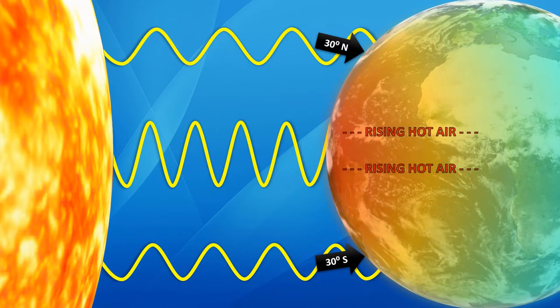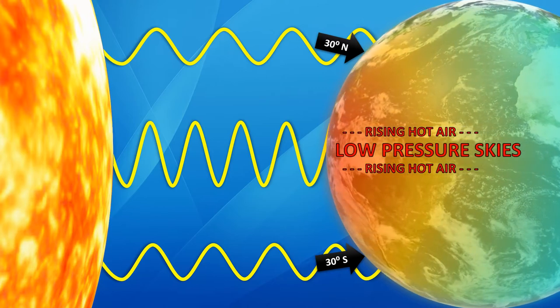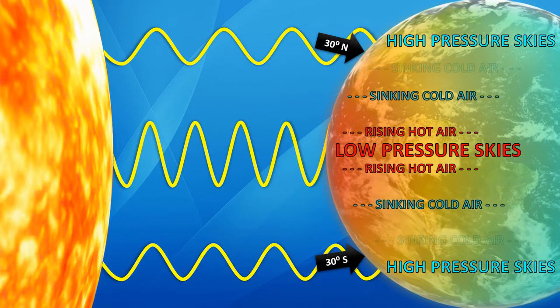The Sun will heat the surface of the equator very efficiently since it's close to the Sun, leading to rising hot air. This rising air pressure creates low pressure skies, attracting the sinking cold air from high pressure skies 30 degrees north and south.